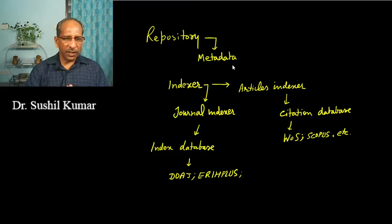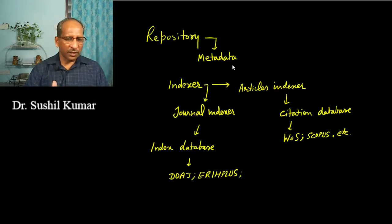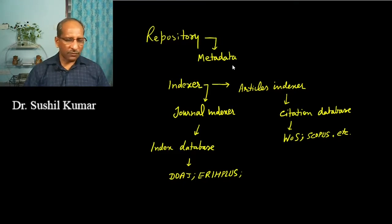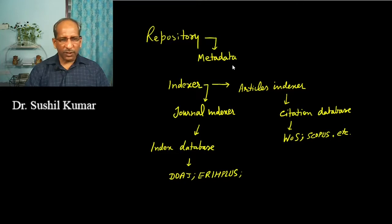The next thing will be about the article indexer, where you will get information about the citation database and which agencies are most popular in defining the matrices — the publication matrices, or research matrices. These two agencies will provide information about the citation of articles in terms of impact factor as well as H-index.